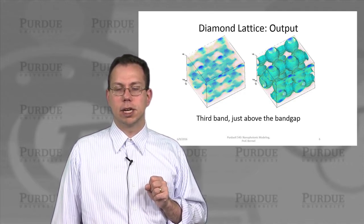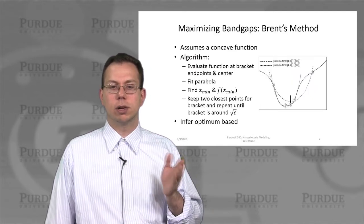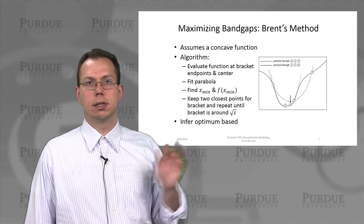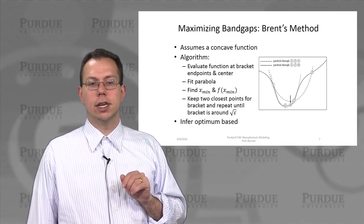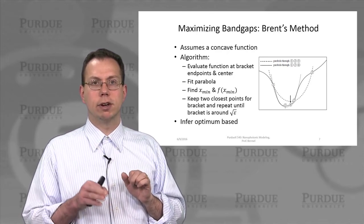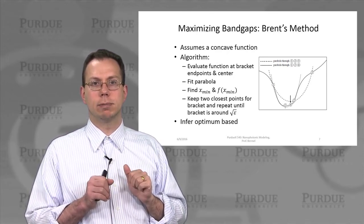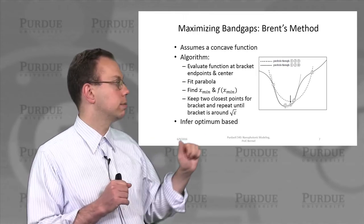Now, in order to maximize band gaps, like the diamond band gap that I just showed you, we can actually invoke what's called Brent's method. And Brent's method is actually a very effective way, if you're doing a single parameter optimization, to very quickly evaluate multiple options. And you can see from numerical recipes how it works.